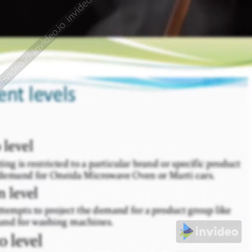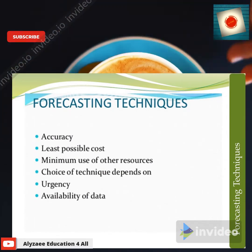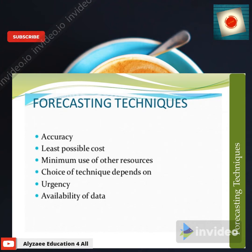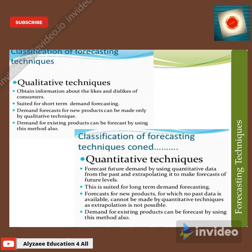Forecasting techniques are used to bring accuracy at the least possible cost, minimum use of resources. The choice of technique depends on urgency and availability of data. Classification of forecasting techniques divides them into two types: qualitative techniques and quantitative techniques.